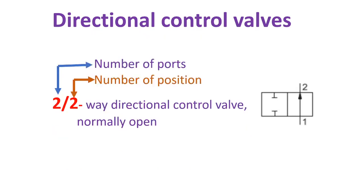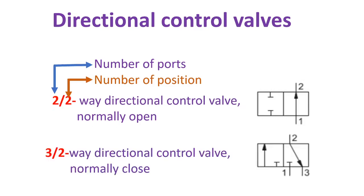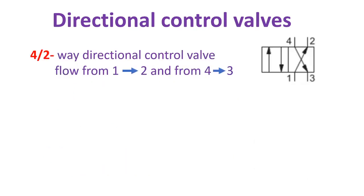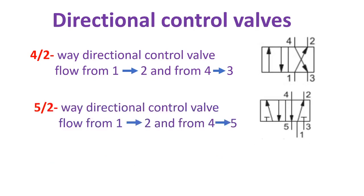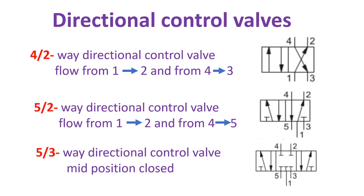The first letter represents the number of ports and the second letter represents the number of positions. This valve is a two-two-way directional control valve, normally open. The next one is a three-two-way directional control valve, normally closed. Then a four-two-way, with flow from port 1 to 2 and from 4 to 3. Then a five-two-way, flow from 1 to 2 and from 4 to 5. Next, a five-three-way directional control valve, mid position closed.